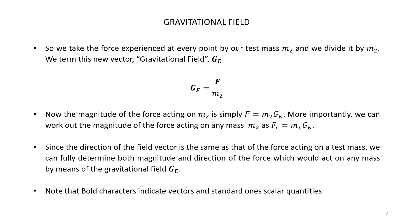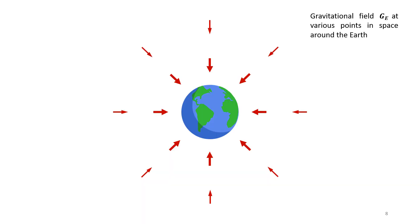Note that here we are using a specific notation to distinguish vectors and scalar quantities. We use bold characters for vectors and standard ones for scalar quantities. A pictorial representation of the gravitational field would, of course, look very similar to that of the force map.